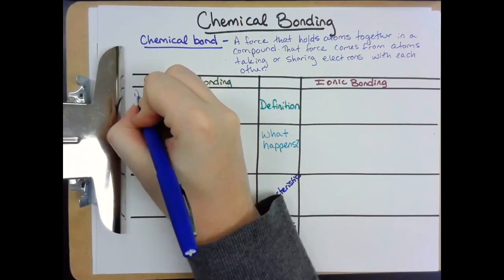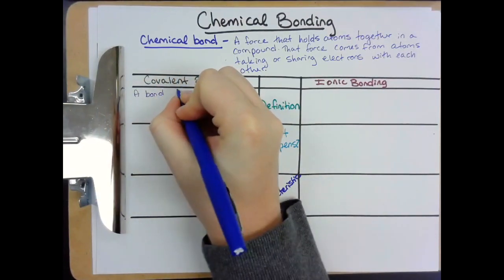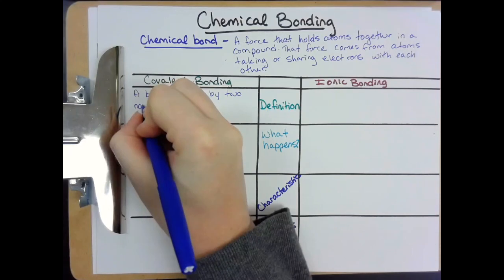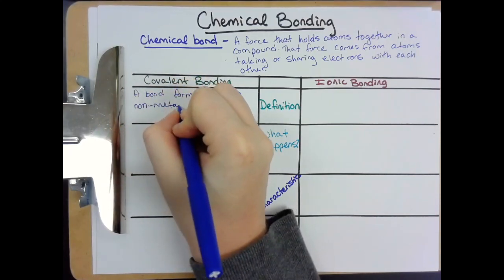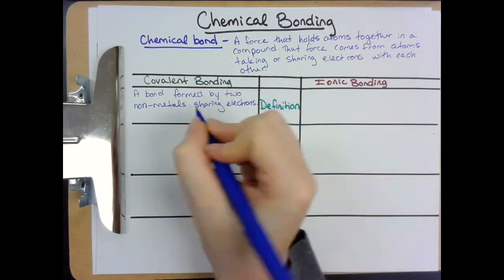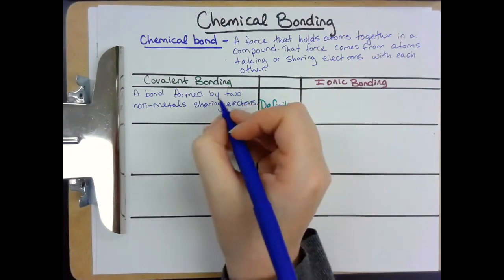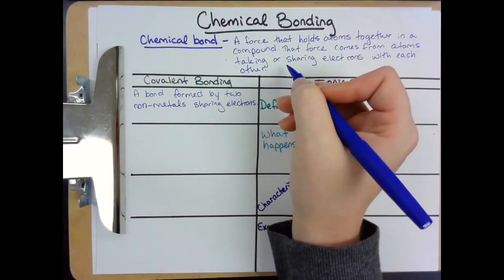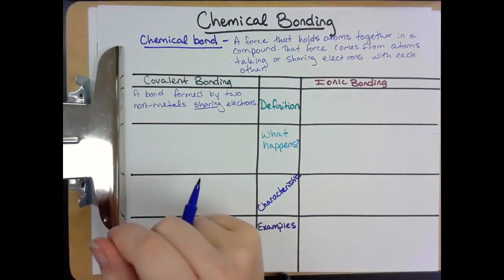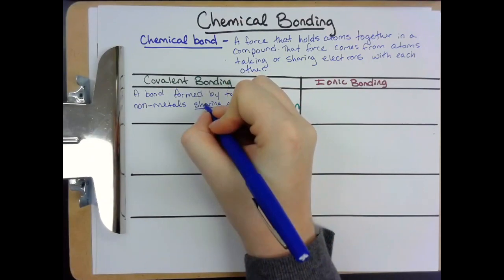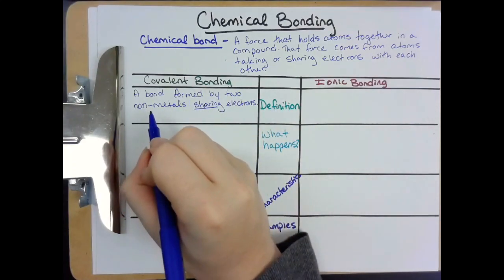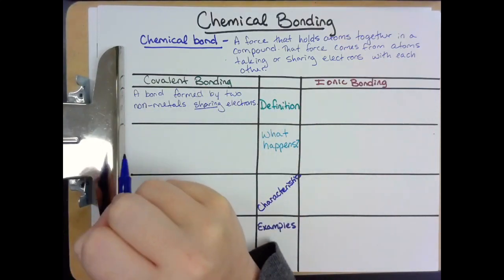The definition of a covalent bond is a bond formed by two nonmetals sharing electrons. We said that chemical bonds could come from atoms taking electrons or sharing electrons. In a covalent bond, those two nonmetals are sharing electrons. Two big things to take away: covalent bonds happen between nonmetals only, and they involve sharing electrons.